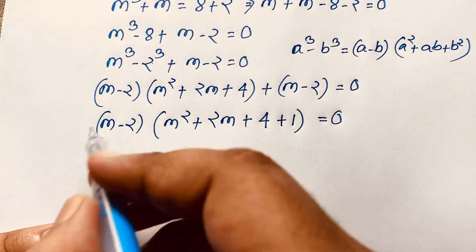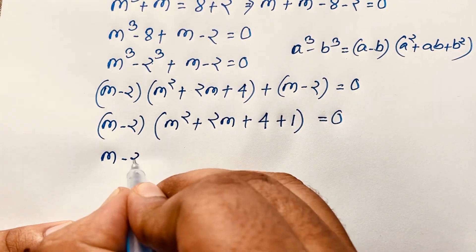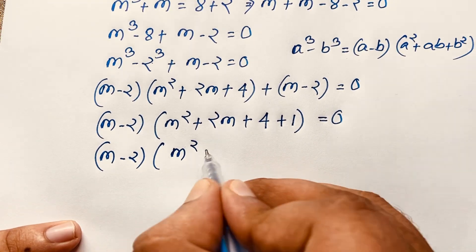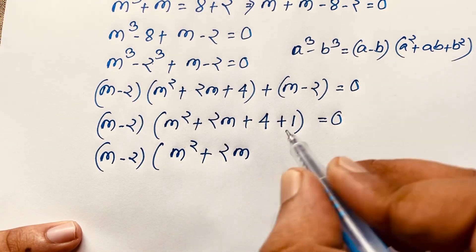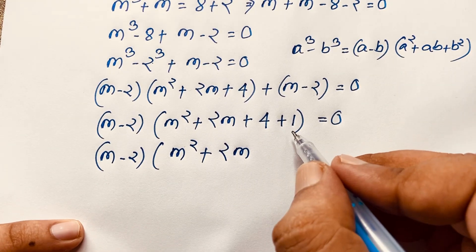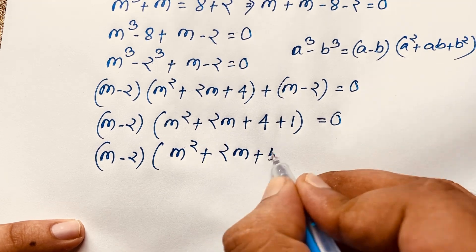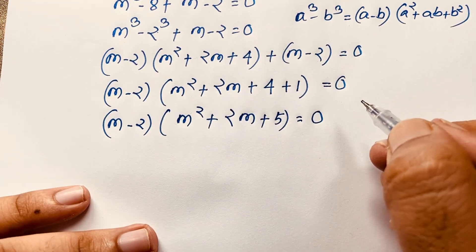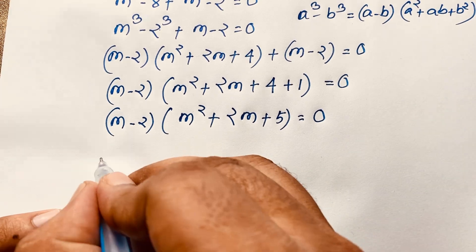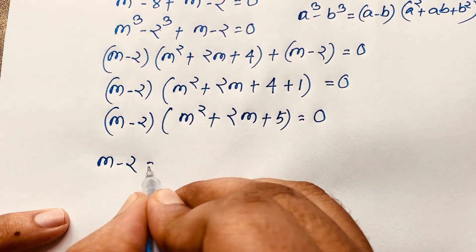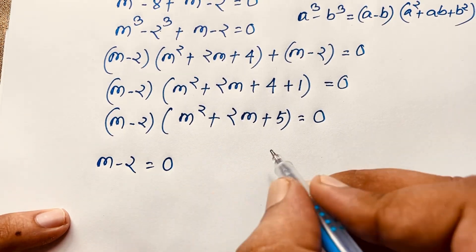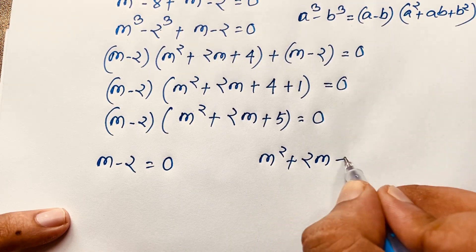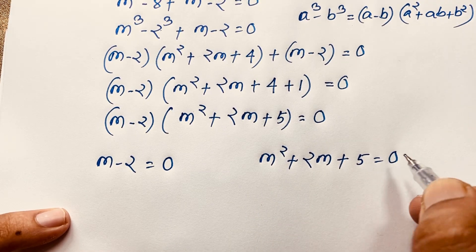Now here, (m minus 2) is common. Taking it out: (m minus 2)(m² plus 2m plus 5) equals 0. We find two cases. First case: m minus 2 equals 0. Second case: m² plus 2m plus 5 equals 0.